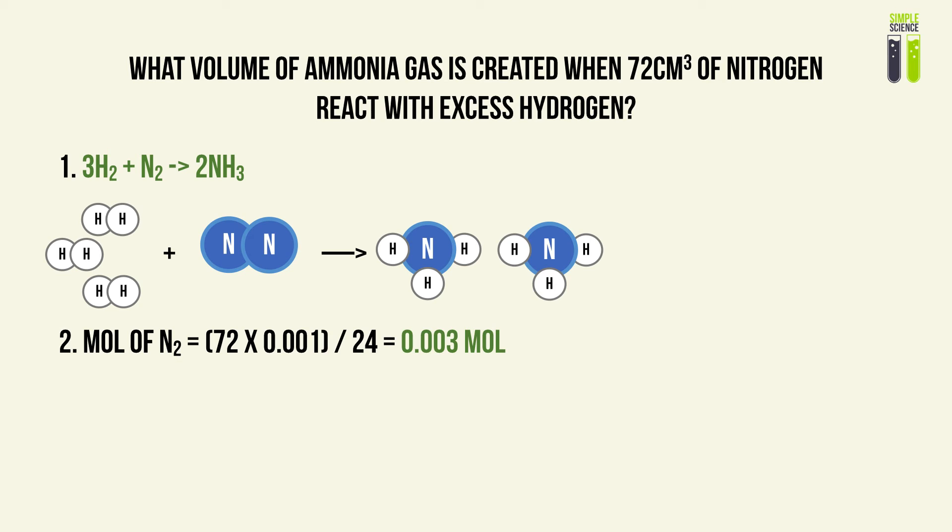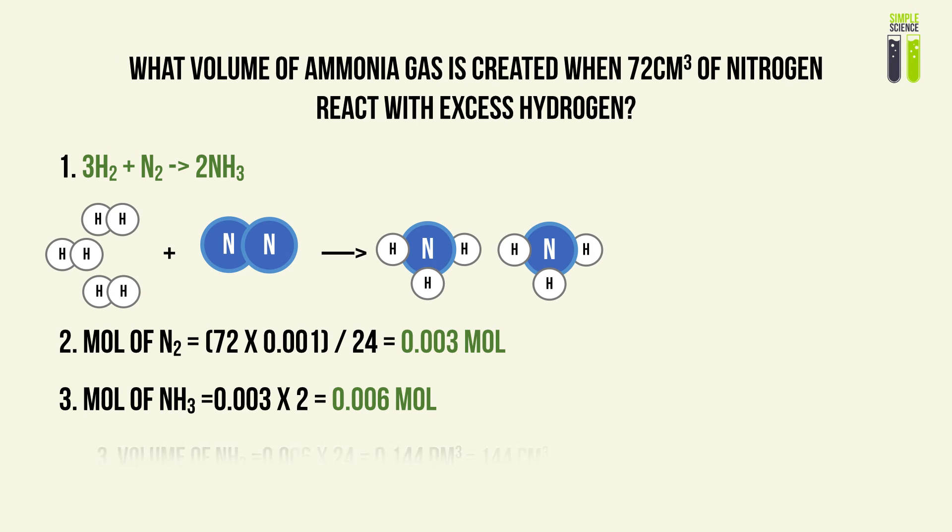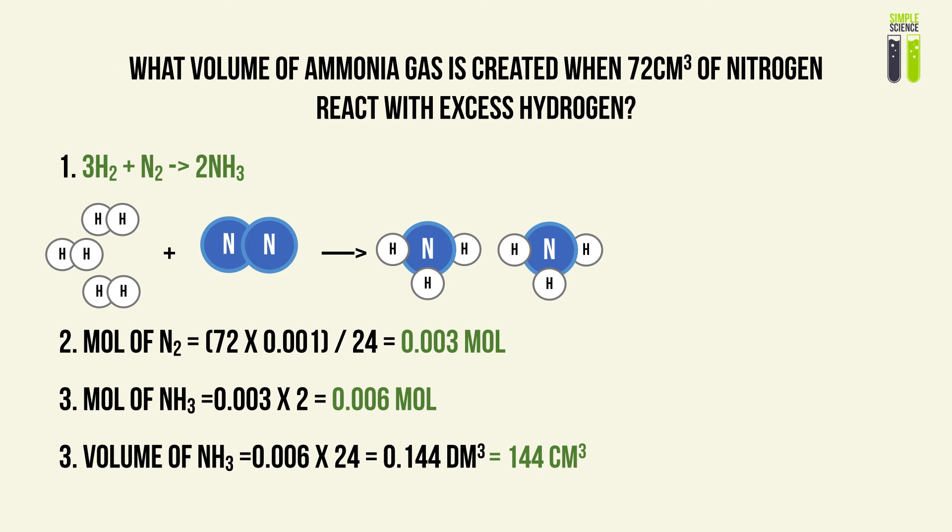There is a linear mole ratio between the ammonia molecules produced and the nitrogen moles reacted, which is 2 to 1 — for every nitrogen molecule, two ammonia molecules are produced. Therefore, the moles of ammonia will be 0.003 × 2 = 0.006 moles. Using the molar gas assumption, we multiply by 24 dm³ per mole to get 0.144 dm³, which converts to 144 cm³ of ammonia gas.